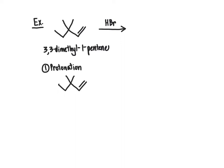We have our starting material, bring in the HBr, and what's going to happen is that the pi bond is going to be acting as the base. It's going to come over and grab a proton from the acid, forcing the bond between H and Br to break. The electrons from that bond are going to go into the bromine, giving us bromide anion as well as our carbocation intermediate.